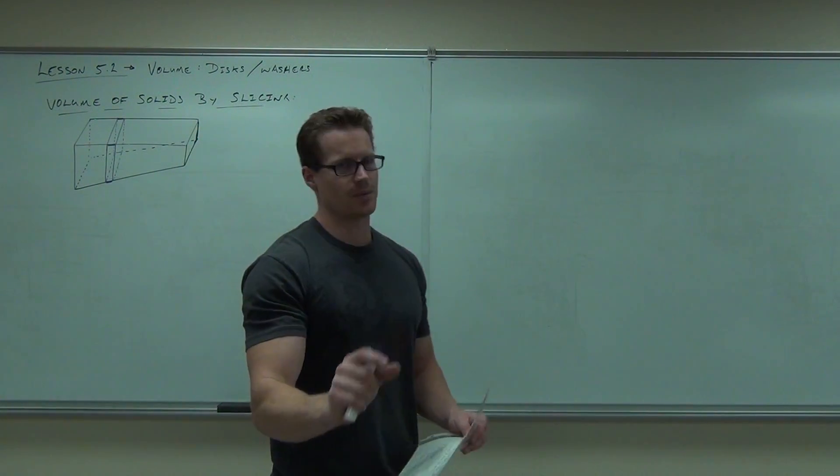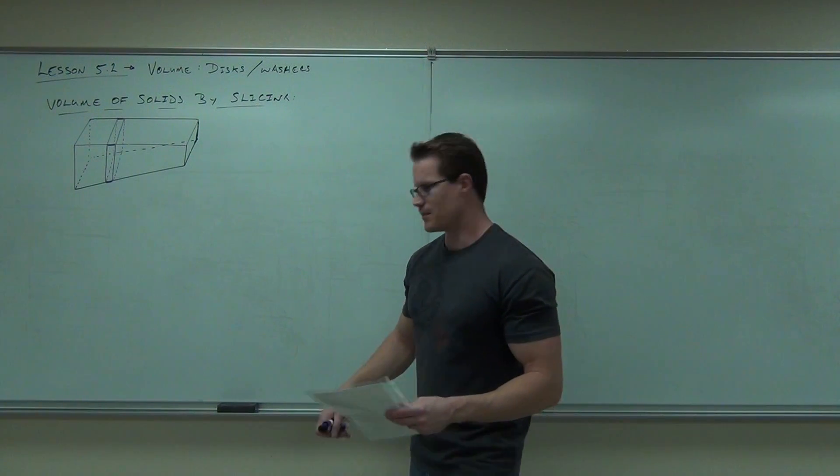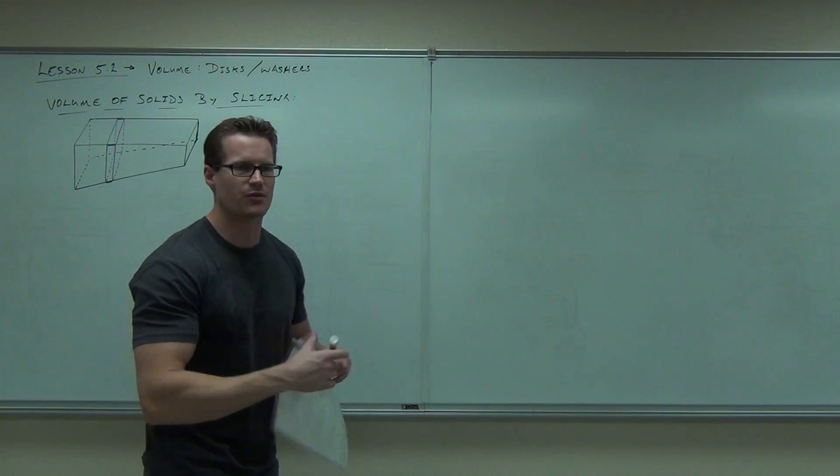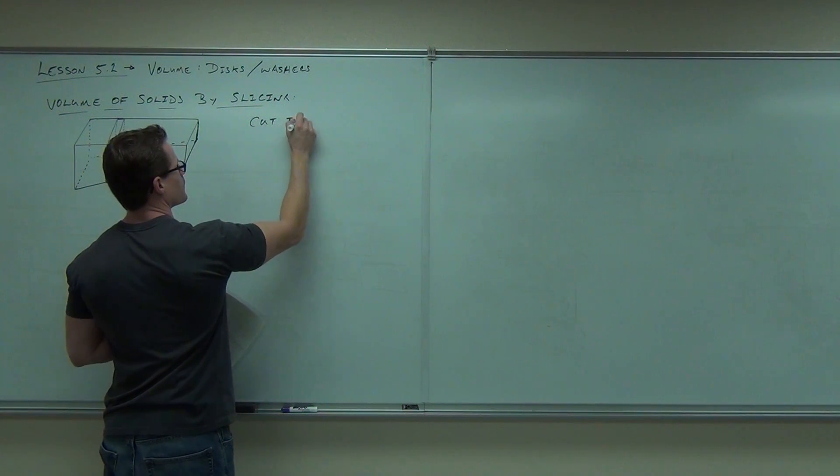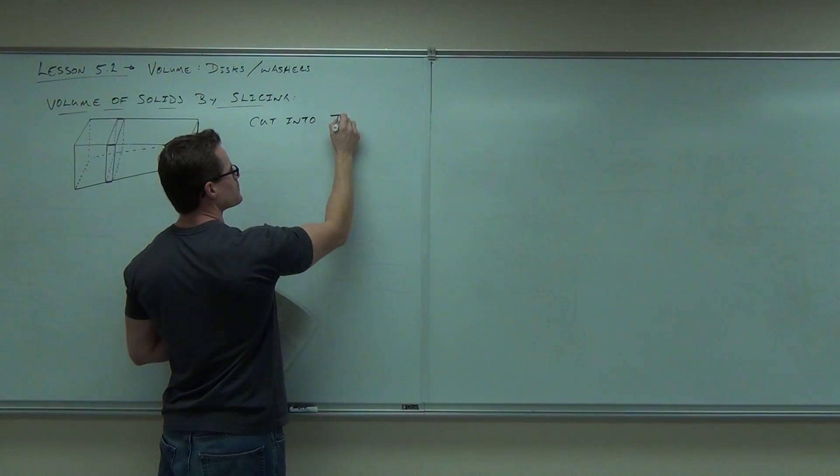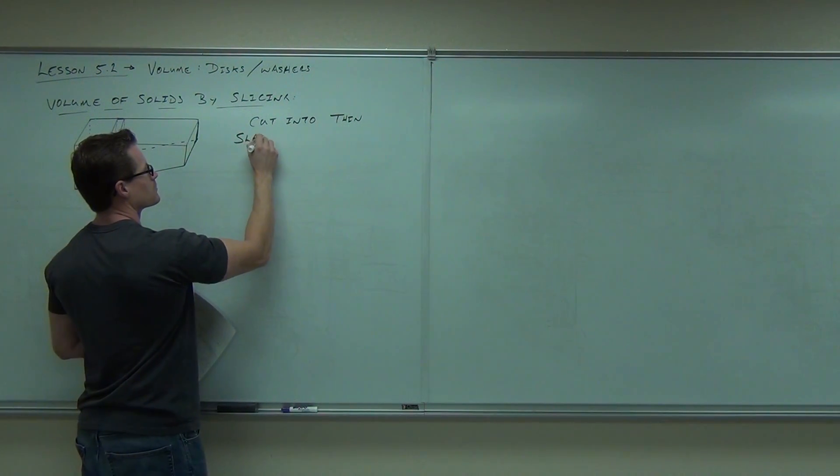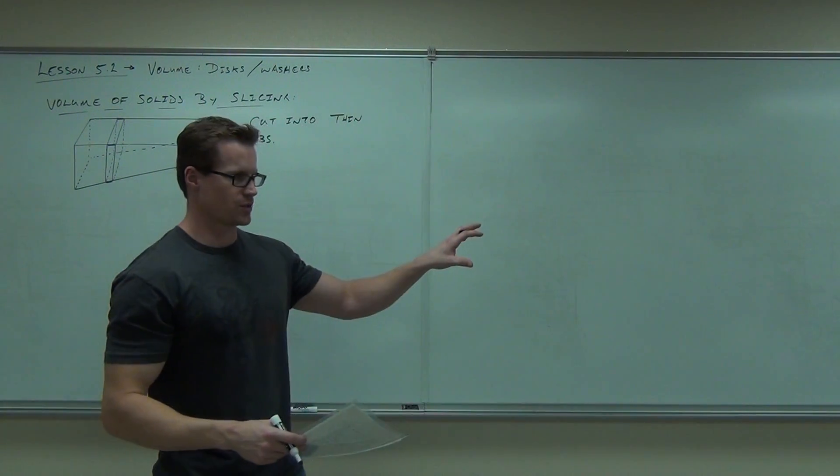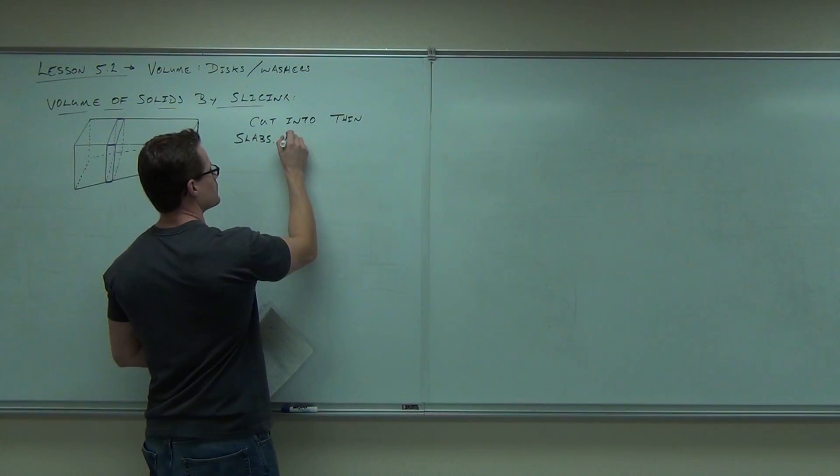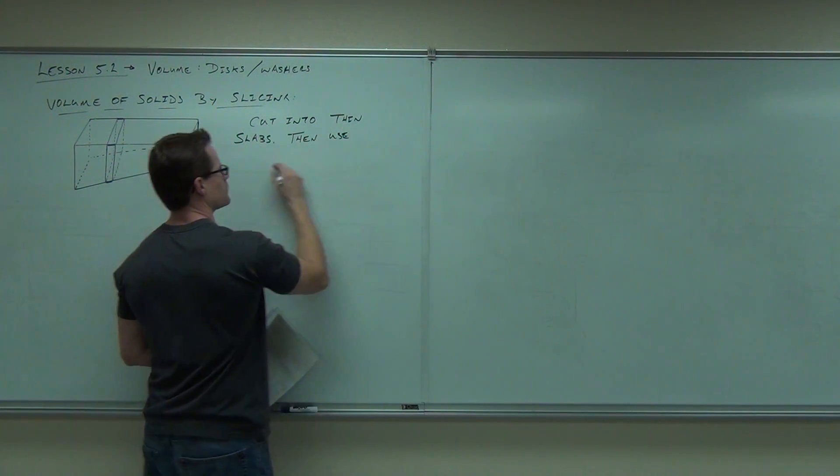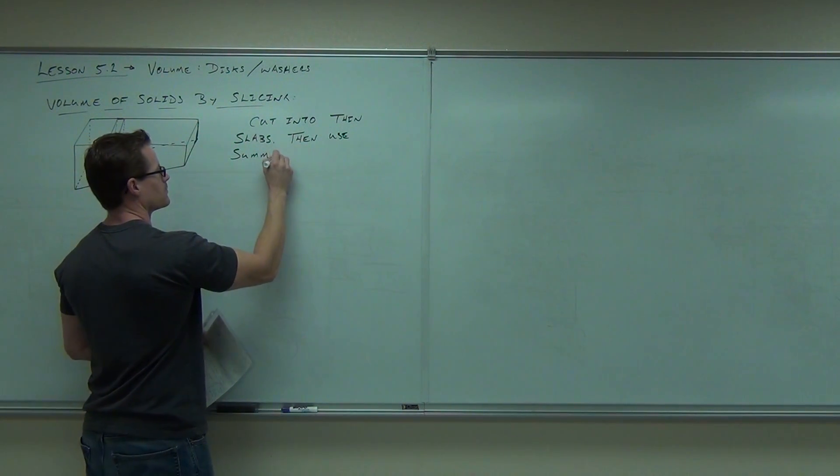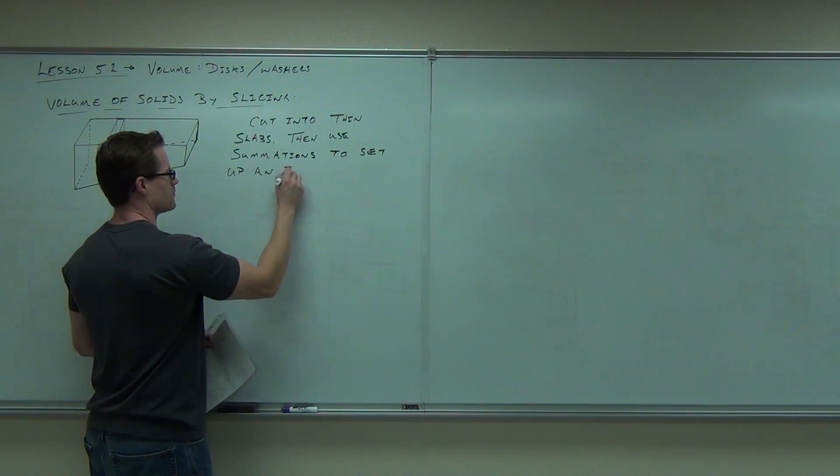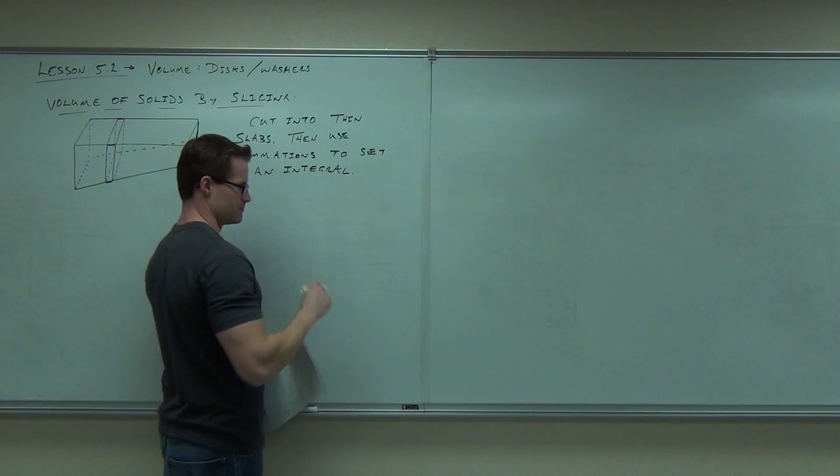Our idea is let's cut this into thin slabs, we'll call it, a slicing or a slab. And we're going to try to use a Riemann sum, use our sums that we used before, to set up some sort of integral.